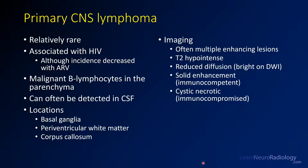Lymphoma is one of the two classic lesions involving the corpus callosum, along with glioblastoma. On imaging, you'll frequently have multiple enhancing lesions that can be T2 hyperintense with reduced diffusion — bright on DWI and dark on ADC. There's a difference based on immune status: immunocompetent patients tend to have more solid enhancement, while HIV or otherwise immunocompromised patients tend to have more cystic necrosis with peripheral rim enhancement.